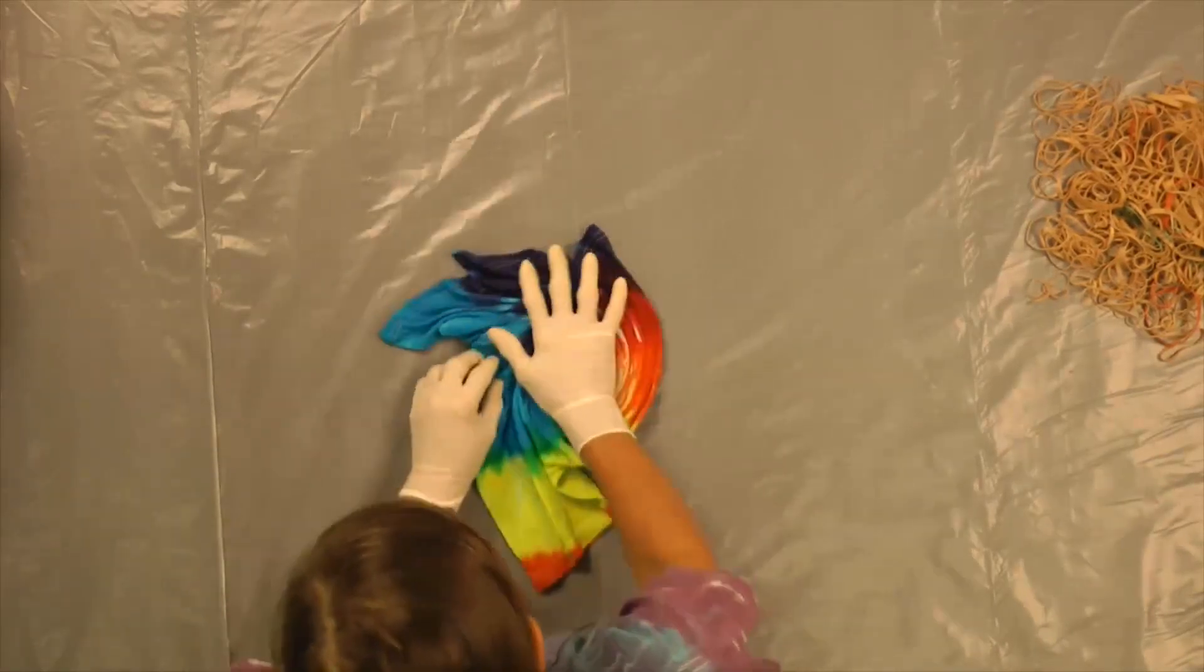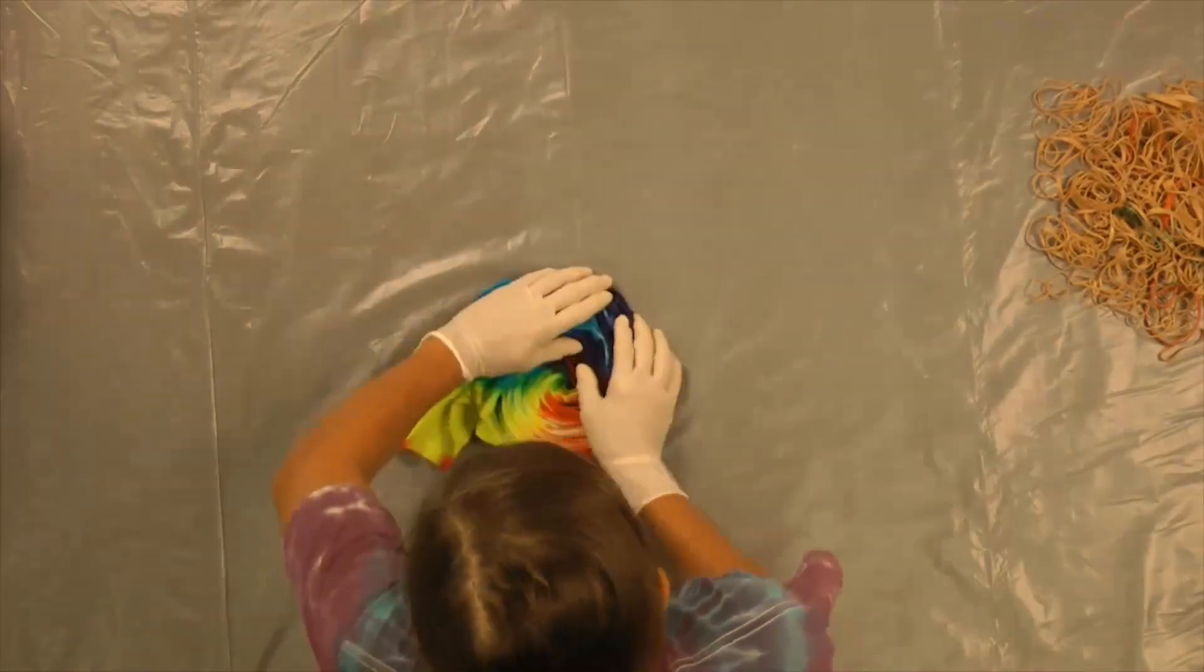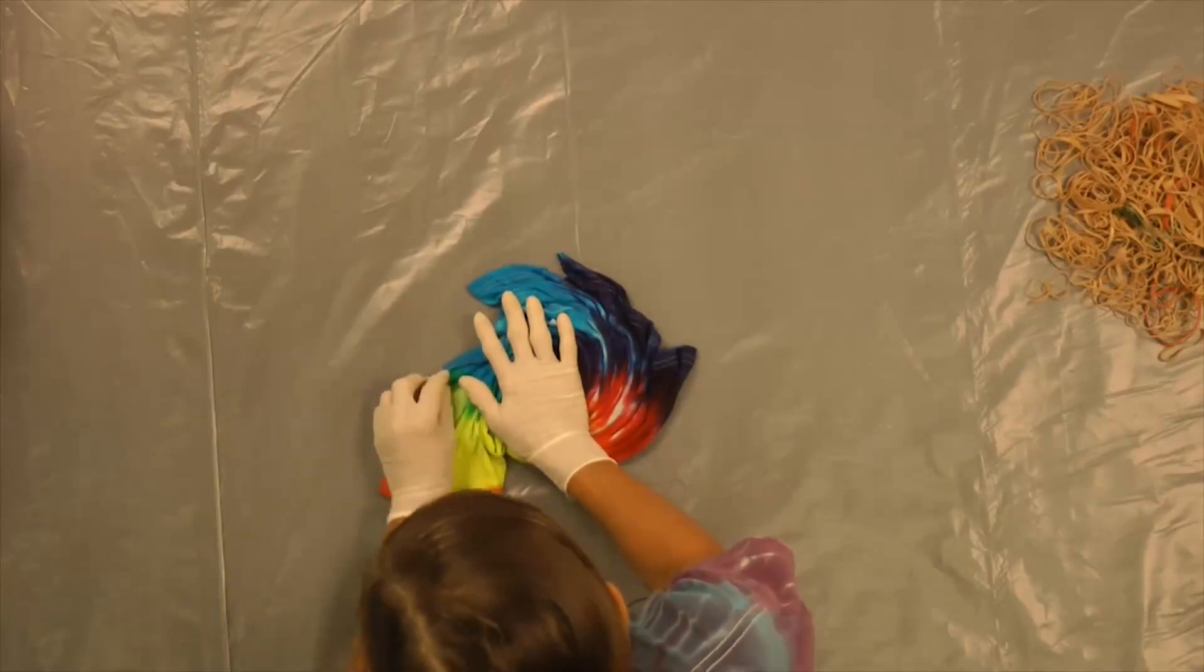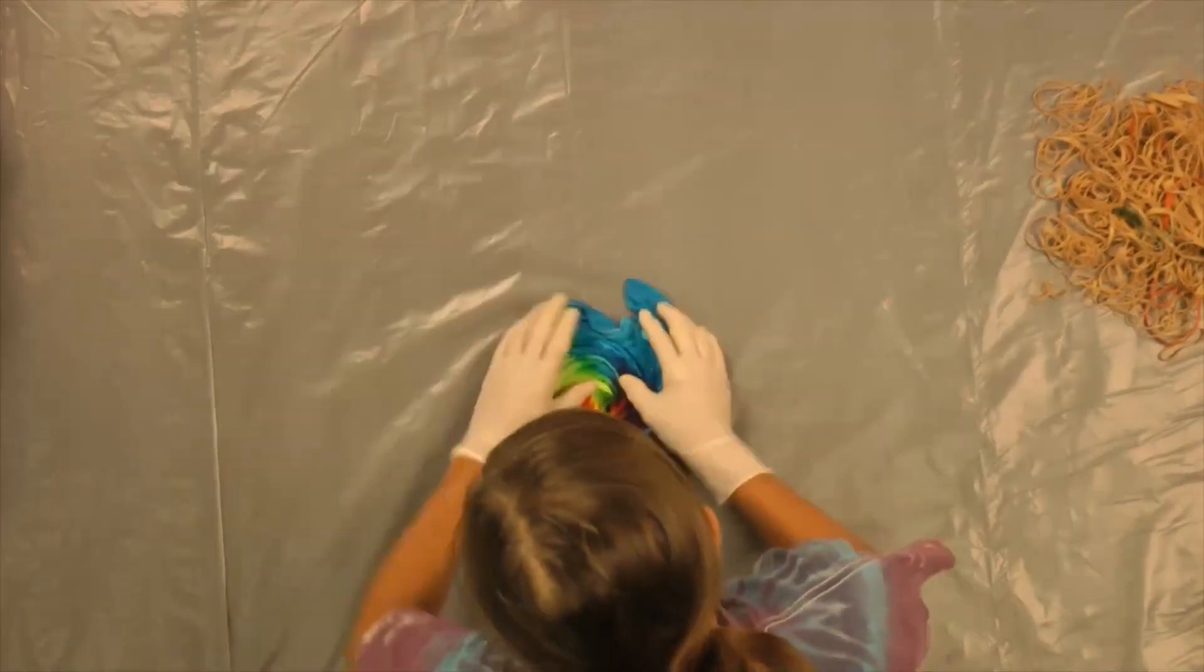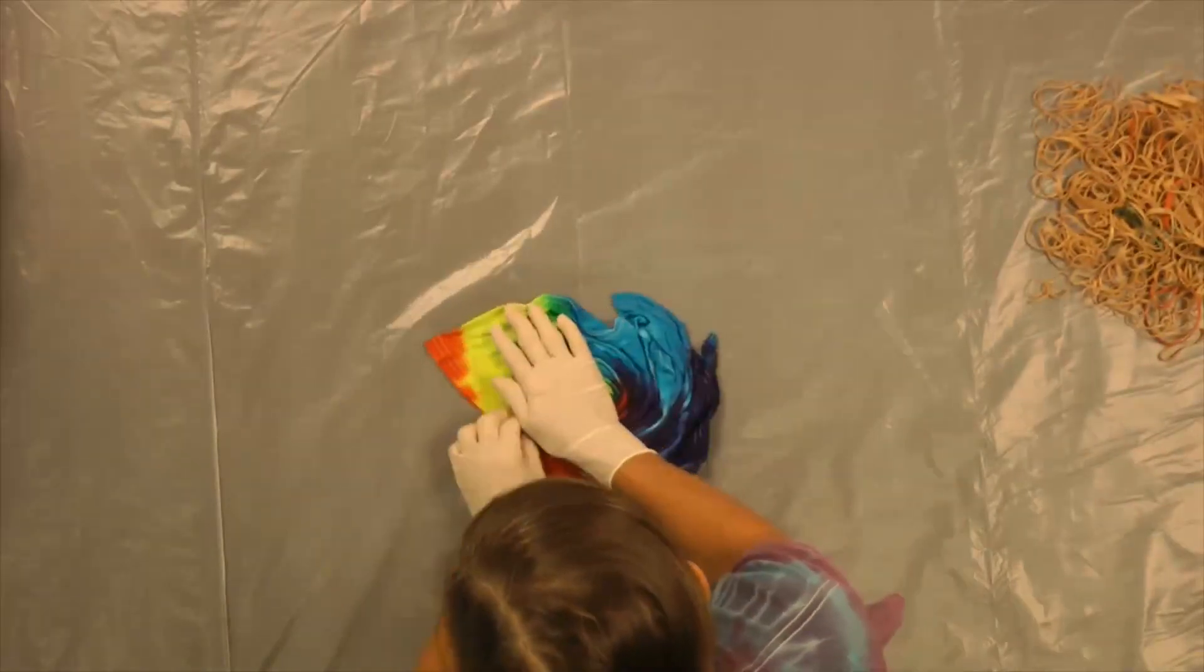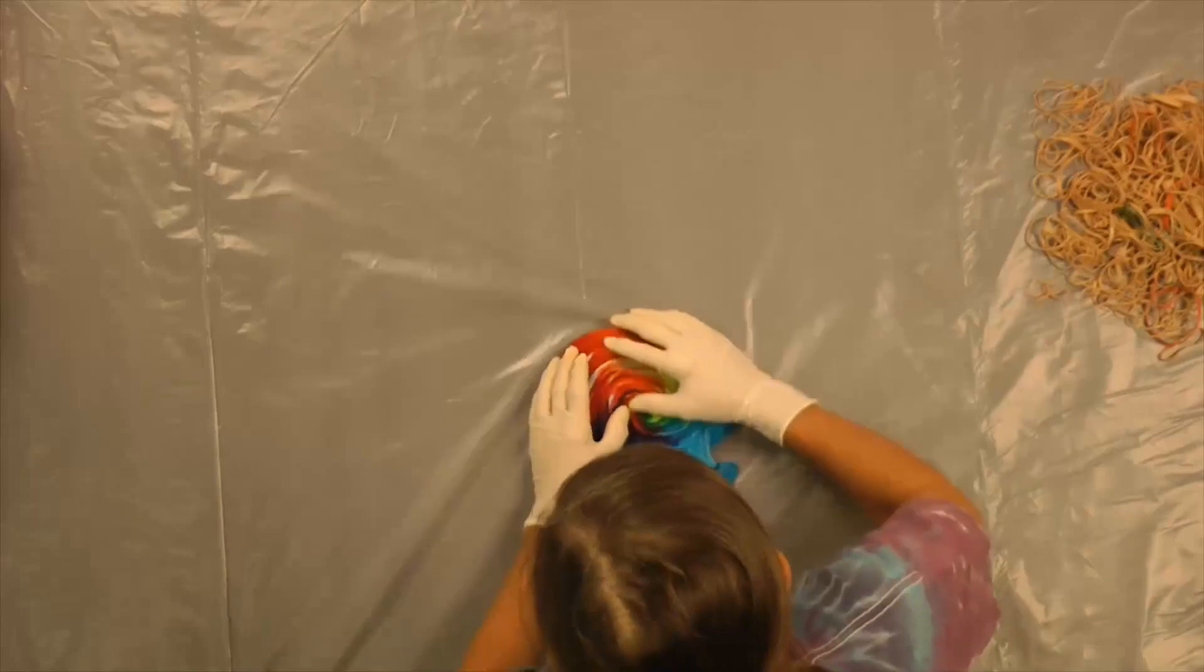Bring it all the way out around itself. The tighter you make it, the less dye penetration on a wet shirt, so you'll get more white. Get it round.